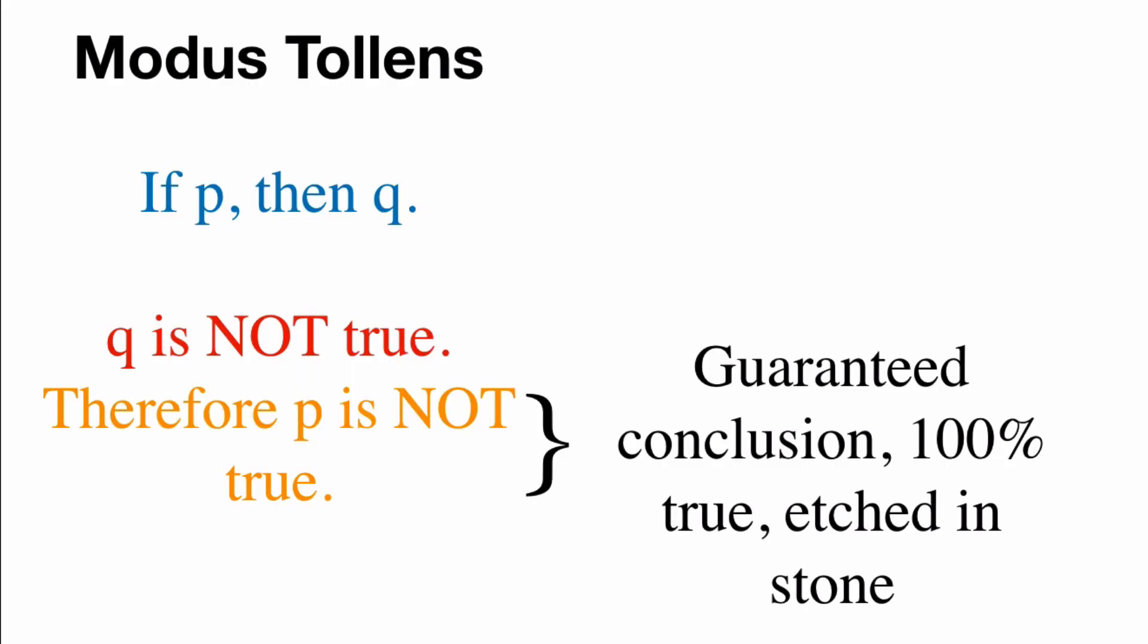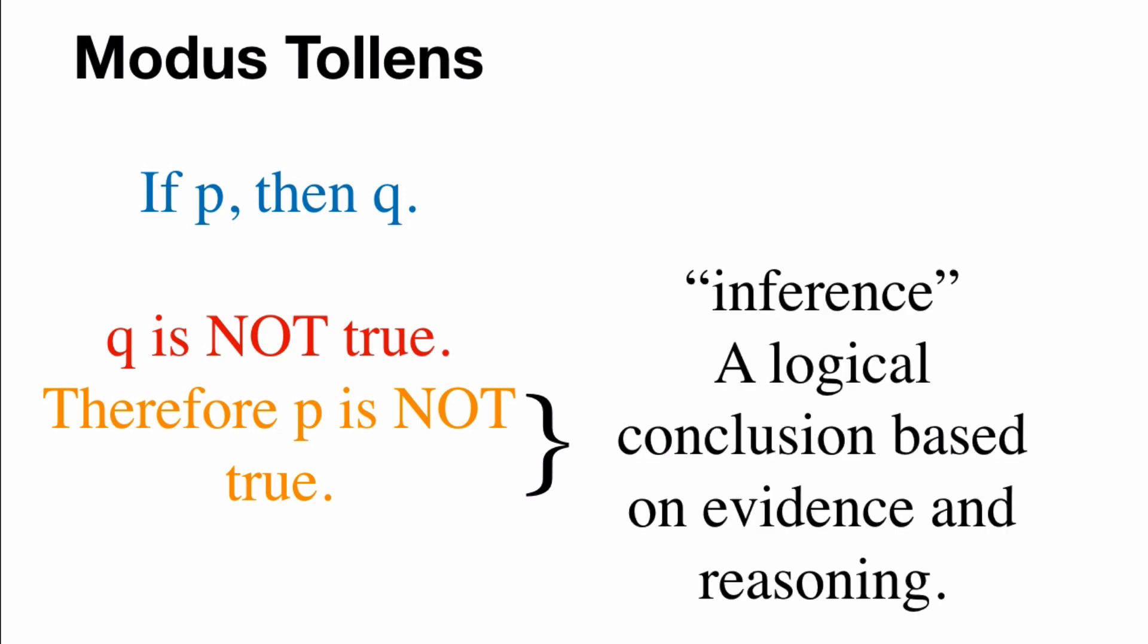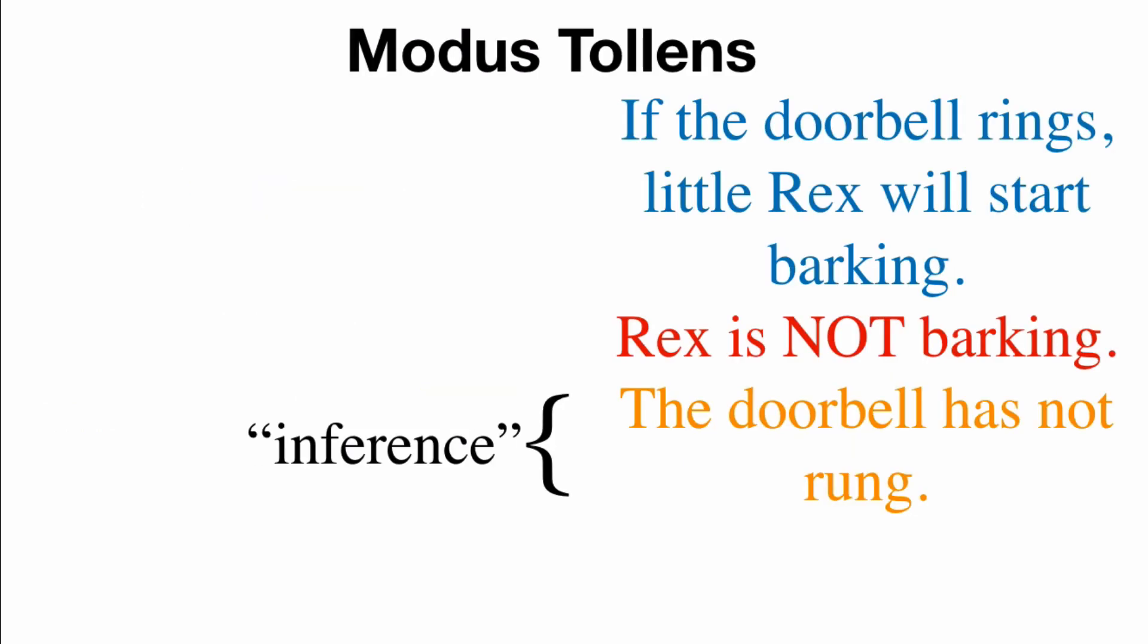So let's take a look at the structure of the modus tollens, and let's examine this conclusion in yellow. So is this a guaranteed conclusion 100% true etched in stone? And the answer is no. Using this logical structure, what's in yellow is simply called the inference. Now, what does an inference mean? It's a logical conclusion based on evidence and reasoning. So in this logical structure, known as modus tollens, this thing in yellow is simply an inference. It just logically follows, but it is not guaranteed by any stretch of the imagination.